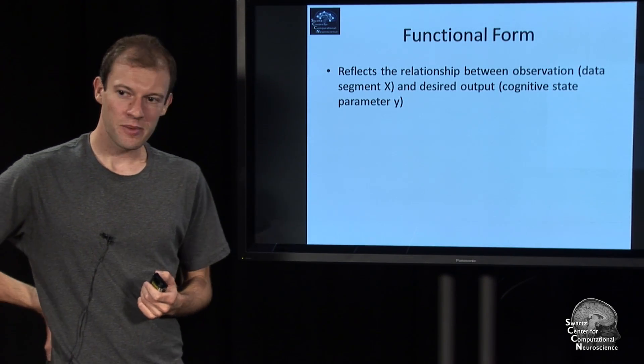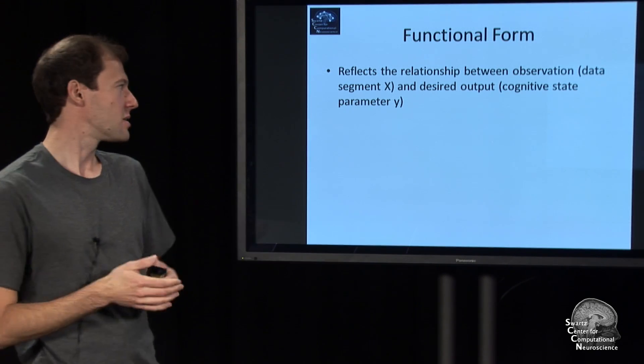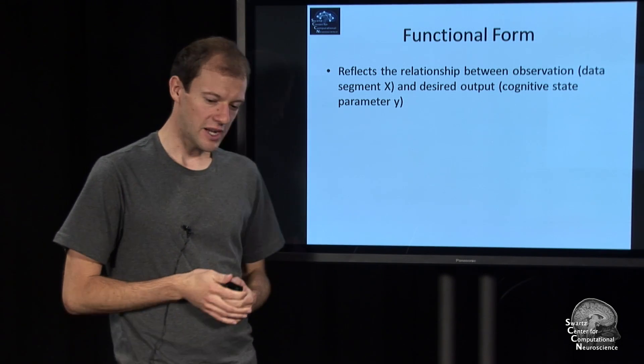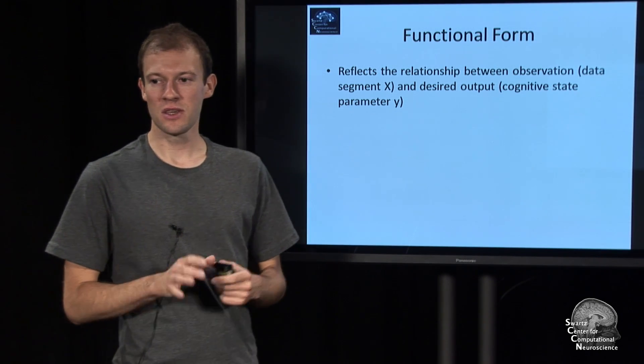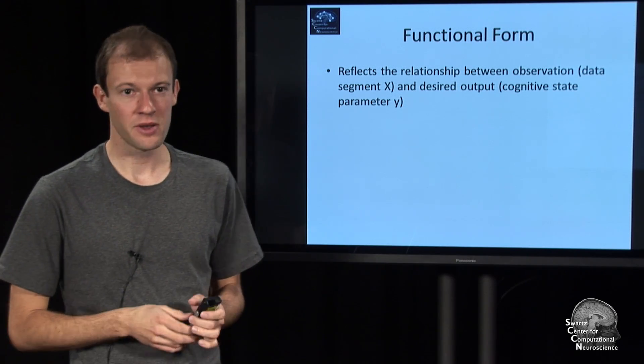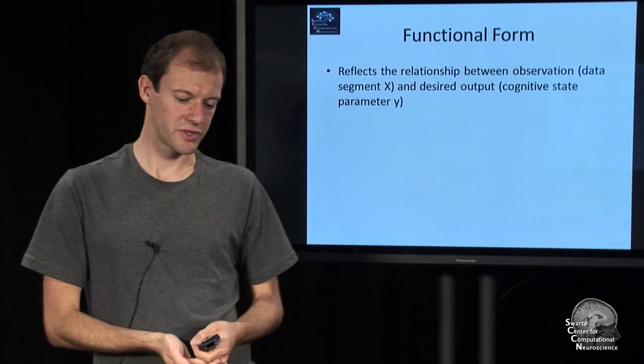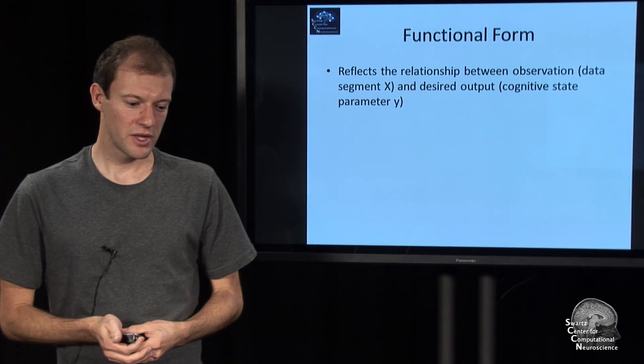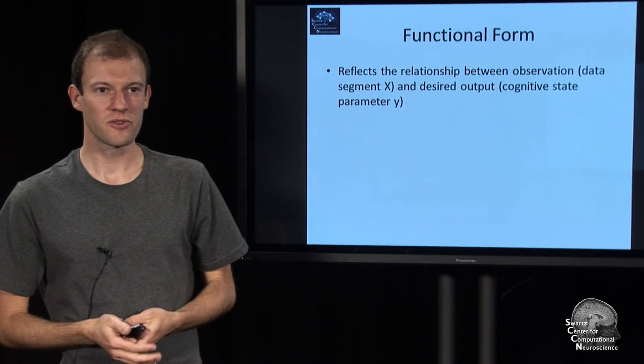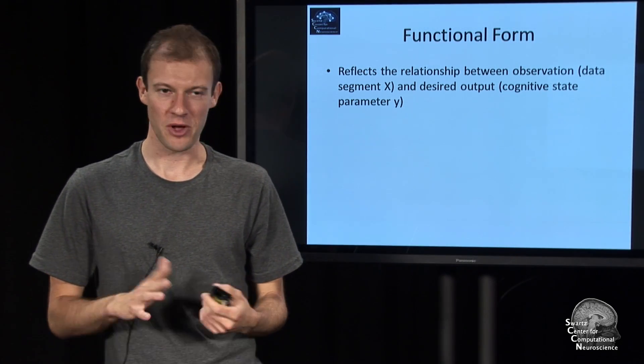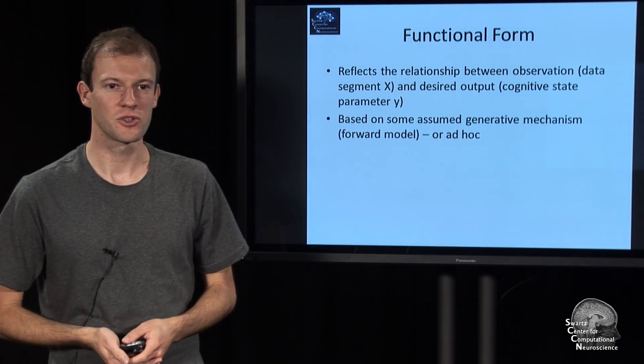What you can say about the functional form is it should reflect the relationship between the observation that you made—the EEG chunk—and the desired thing that you're trying to infer, the cognitive state parameters, such as the person is excited or not. There's a relationship between the person being excited and the EEG, and this relationship is mathematical and has to show up somewhere in the functional form.